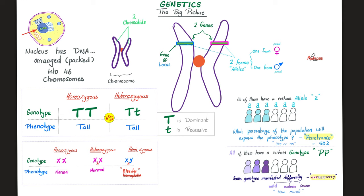The location of that gene on the chromosome is called the locus. Now, suppose that we have a tall individual. That tall individual could be uppercase T, uppercase T — or uppercase T, lowercase t. Why? Because the capital T dominates over the small t. The big T is dominant, but the small t is recessive. So big T, big T is tall; big T, small t is also tall. How about small t, small t? That will be a short individual.